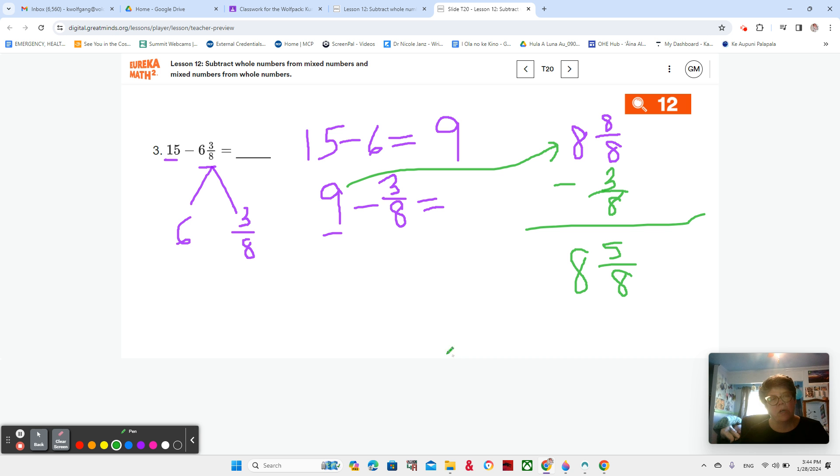Okay. Let's just try a number line. Let's start at 15. And we're going to be taking away 6. We already know we're going to end up at 9, right? And we're taking away eighths.